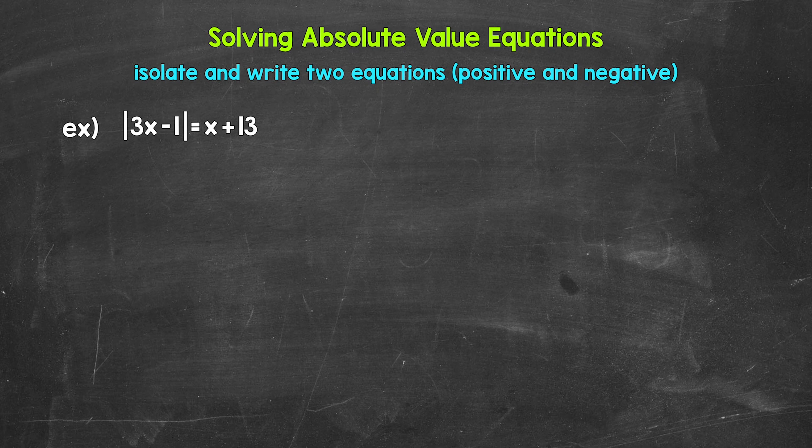For this example, our absolute value is isolated. So now we need to write two equations, one equal to a positive and one equal to a negative. For this equation, the absolute value doesn't just equal a number — it equals x plus 13. But we can still write two equations, one equal to a positive and one equal to a negative.